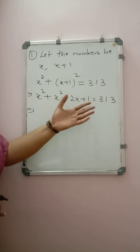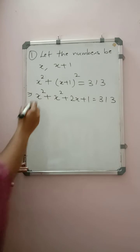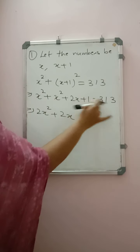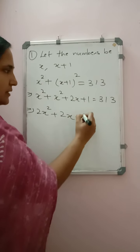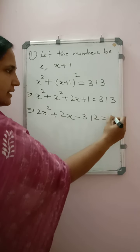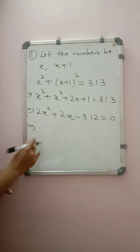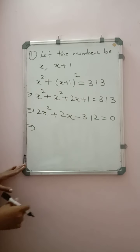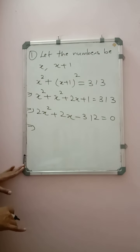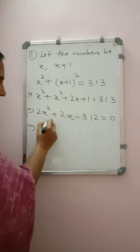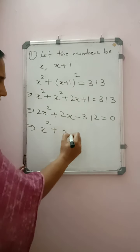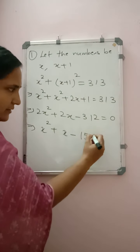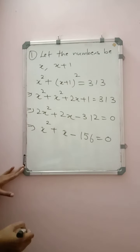We will shift all the numbers to one side: 2x² + 2x + 1 − 313 = 0, which gives 2x² + 2x − 312 = 0. All numbers are divisible by 2, so we can divide by 2 to make our calculations easy: x² + x − 156 = 0.